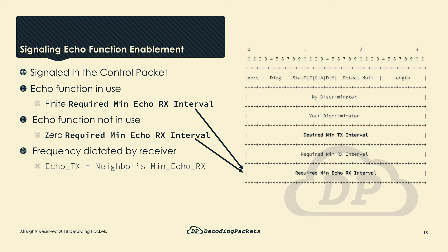As you might have guessed by the name, the required min echo RX interval dictates to the peer receiving the packet that if the echo function is used, how frequently the sender can receive echo packets. It is the same thing as the desired min RX interval, but for echo. The frequency of a peer's echo packets is dictated by its neighbor: you cannot send packets more frequently than this advertised value. You can send at a lower frequency — further apart — but not faster than whatever that millisecond value is. This is not much different than the way BFD detection is performed in non-echo mode.